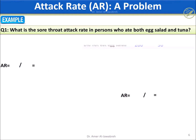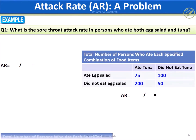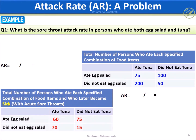We start with the lower table that represents sick persons. The AR for Question 1 — persons who ate tuna and salad — is 60 persons from the lower table over 75 total persons from the upper table who ate tuna and salad. AR equals 0.8, times 100, which equals 80%.